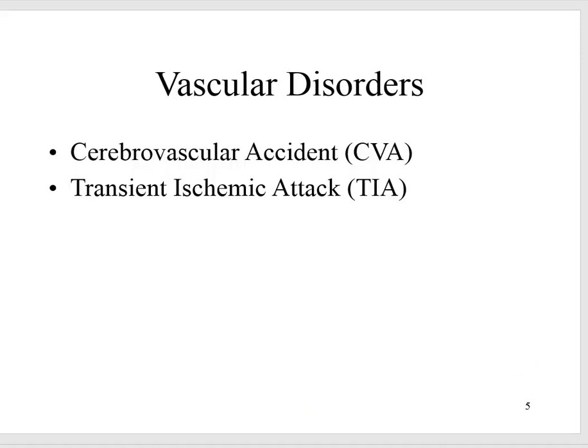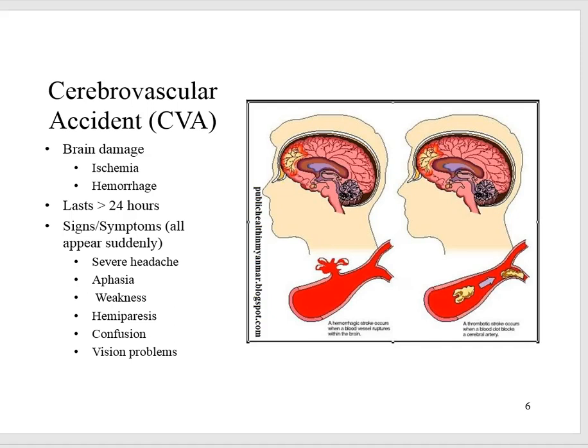We're going to talk about vascular disorders — cerebrovascular accidents and transient ischemic attack. A cerebrovascular accident is when blood supply to the brain is interrupted, causing brain damage due to ischemia or hemorrhage. Ischemia could be a thrombotic stroke — a stationary clot that forms in a blood vessel — or an embolic stroke, where a clot travels through the bloodstream and becomes lodged in a vessel. A cerebral hemorrhage is bleeding directly into the brain tissue, which can be caused by a cerebral aneurysm. It lasts greater than 24 hours. Signs and symptoms appear suddenly: severe headache, aphasia (inability to communicate), weakness, hemiparesis, confusion, and vision problems.